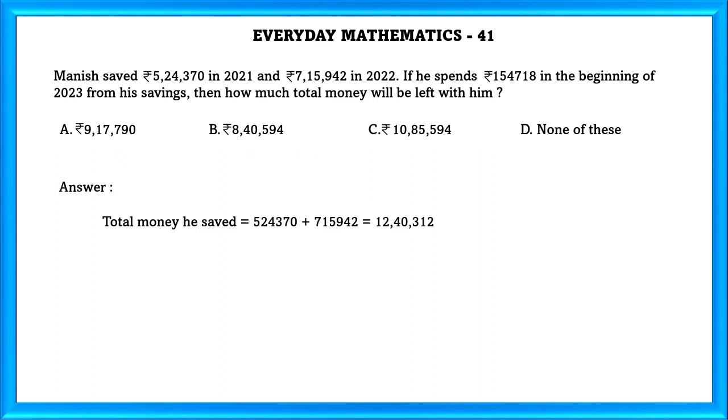Total money he saved equals Rs. 12,40,312. Total money left with him after he spent equals total money he saved minus spent which equals Rs. 10,85,594. That is option C.